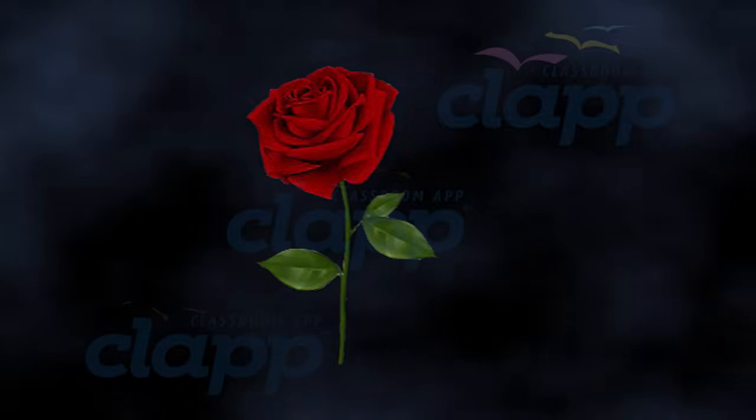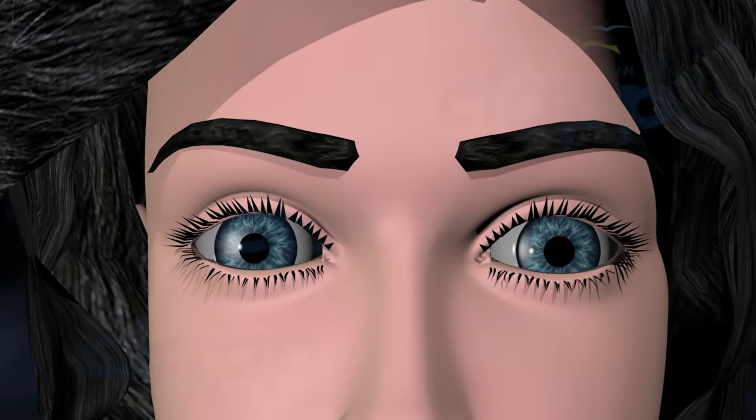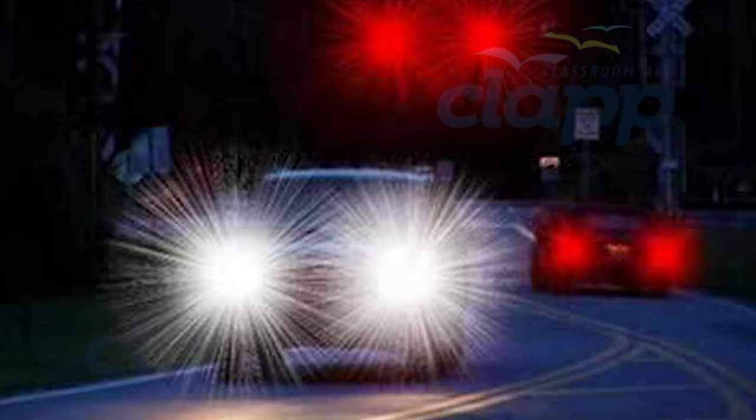Imagine looking through a foggy window. That's similar to what it's like when you have cataracts. If you have cataracts, you may experience symptoms like blurred vision, difficulty seeing in low light, sensitivity to glare, and seeing halos around lights. These symptoms can greatly affect your daily life and activities.